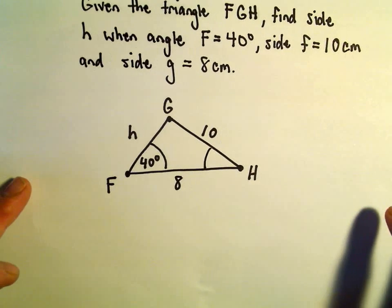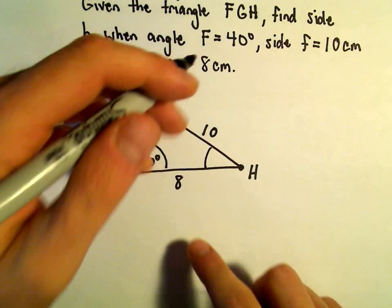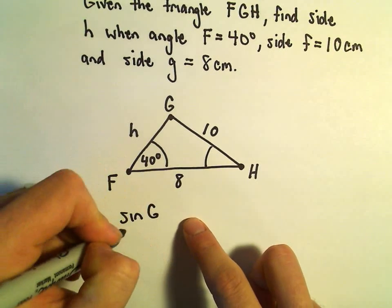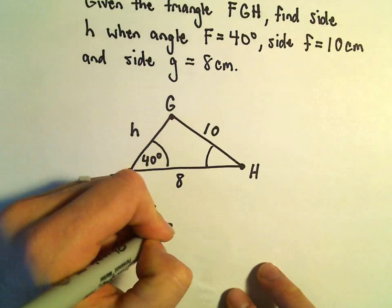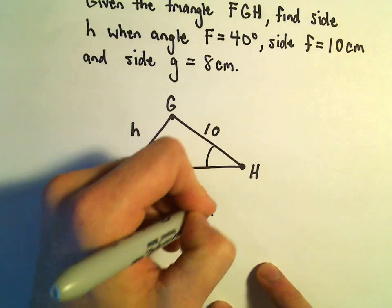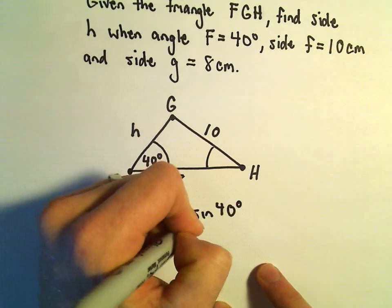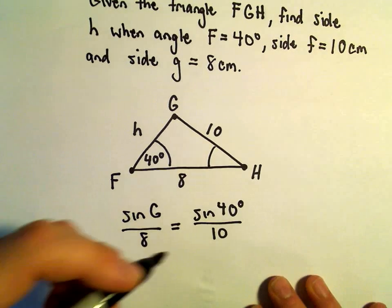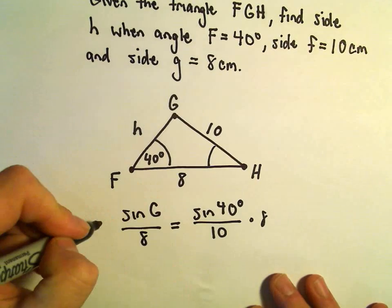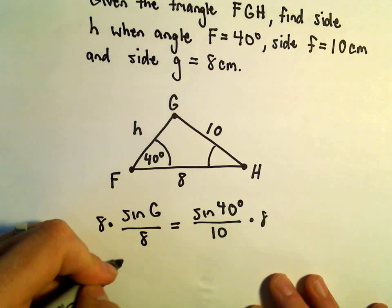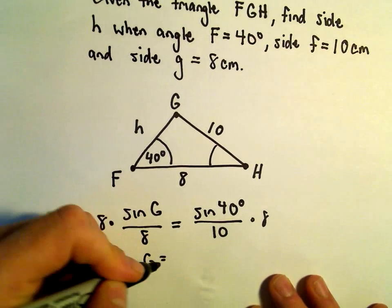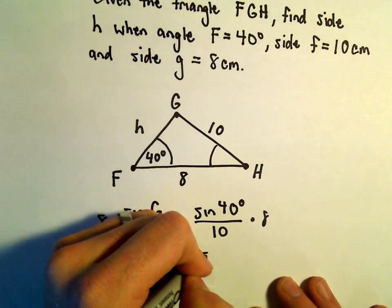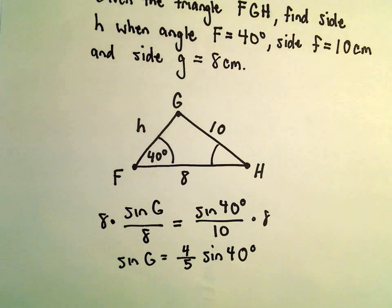So, the first thing we're going to do is try to figure out angle G. So we can say sine of angle G over 8, that would equal sine of 40 degrees over 10. So now I'm simply just going to multiply both sides by 8. So then we'll get sine of angle G equals 8 over 10, which is 4 fifths times sine of 40 degrees.